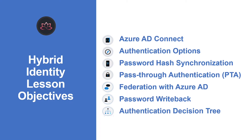Let's have a high-level look at the things we're going to learn in this video. We will start with what is Azure AD Connect and what are the different types of authentication options available. We will go deep into Password Hash Synchronization (PHS) and Pass-Through Authentication (PTA). Then we will discuss Federation with Azure AD and options available with Azure AD Connect, including Password Writeback. We will finish with an Authentication Decision Tree.